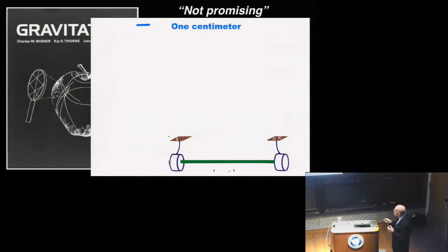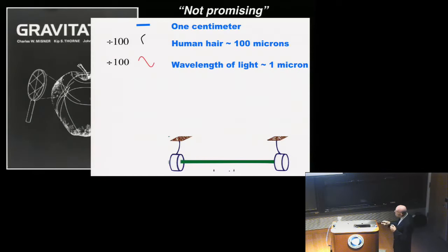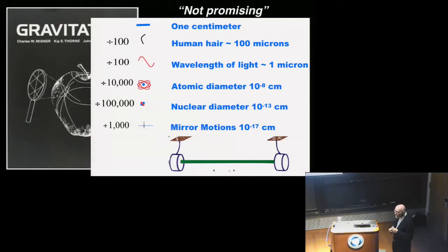I had not yet studied Ray's technical paper in any depth, so I just looked at the numbers and said to myself: this is crazy, this is stupid. In my textbook I wrote 'it is not promising' instead of 'it's crazy and stupid.' Let me give you some numbers. If I begin with one centimeter and divide by 100, I get the thickness of a human hair. Divide by another 100, I get the wavelength of the light used in our detectors. Divide by 10,000, I get the diameter of an atom. Divide by 100,000, I get the nucleus diameter. Divide by 1,000, I get the mirror motions we were expecting — a trillion times smaller than the wavelength of light. It seemed totally outrageous to measure motions using light that were a trillion times smaller than that light's wavelength.